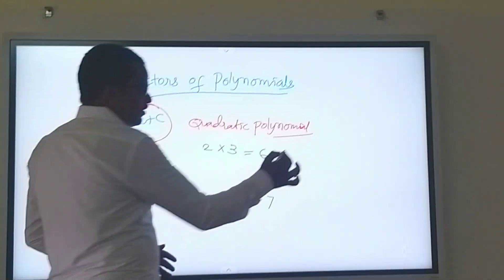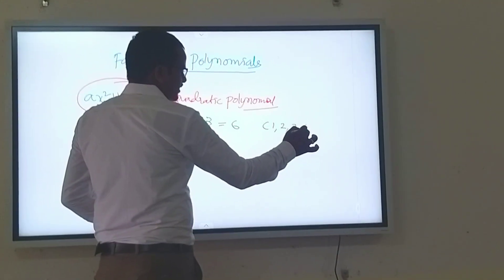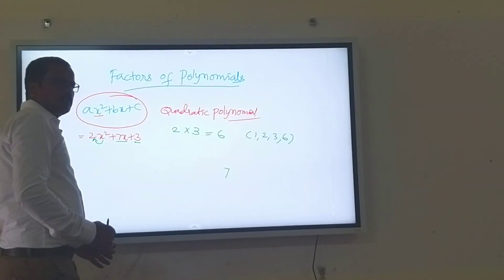So, what are the factors of 6? 1, 2, 3, 6.